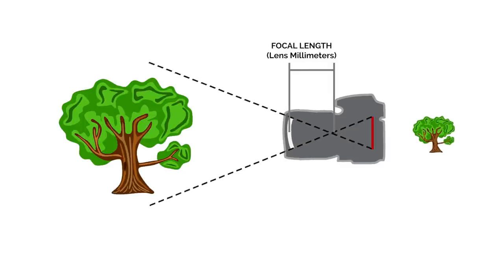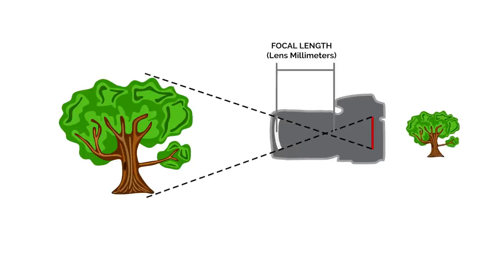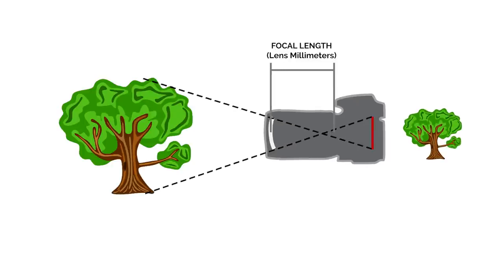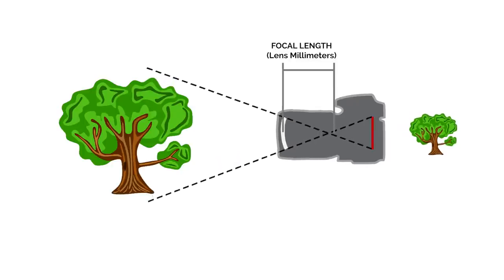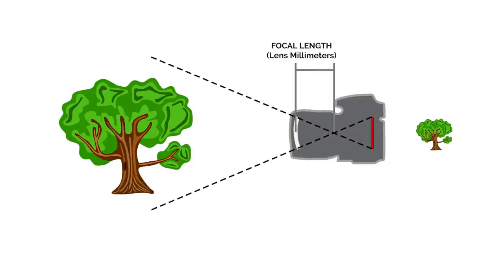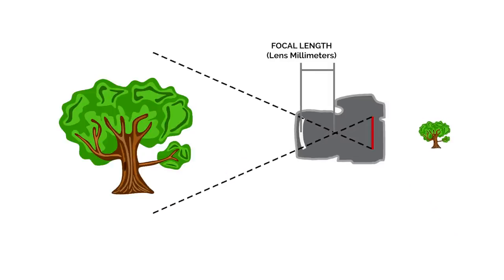When you change the focal length, such as using a longer or shorter lens, you're changing the distance from the middle of the lens to where it focuses. And that focus point is the sensor in your camera.